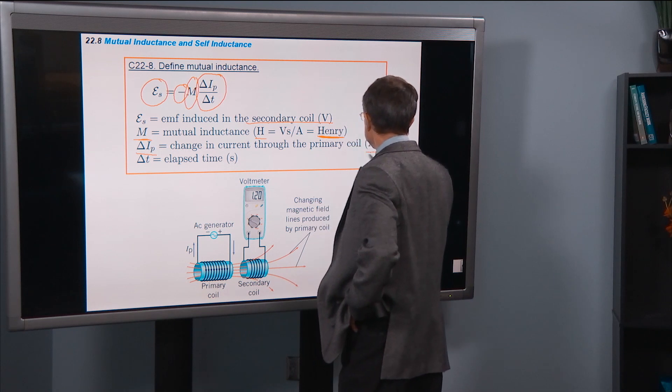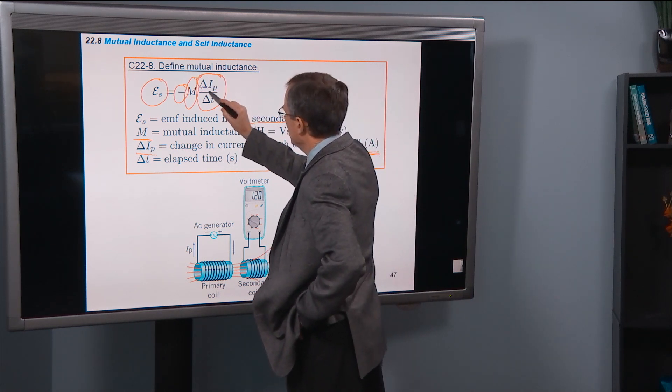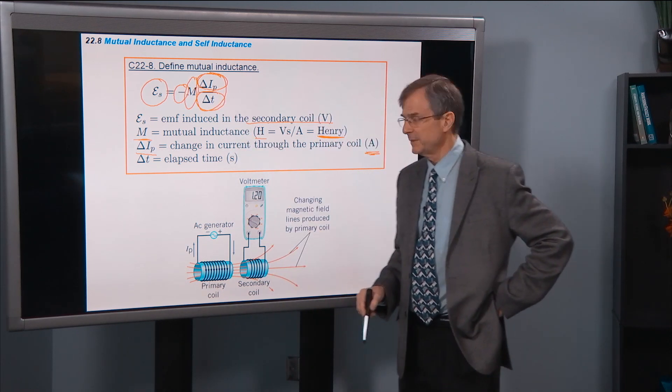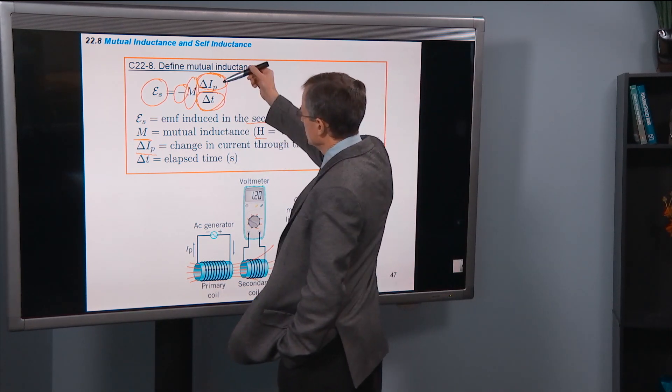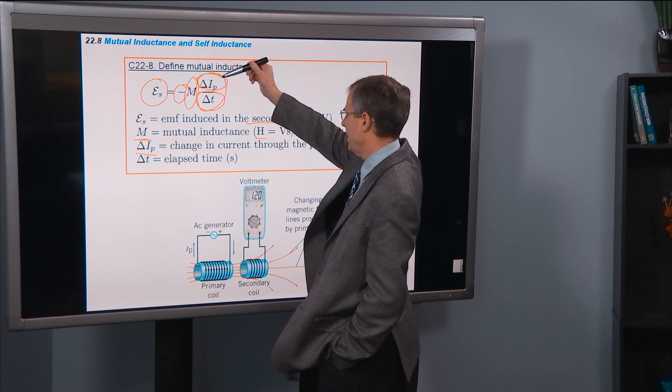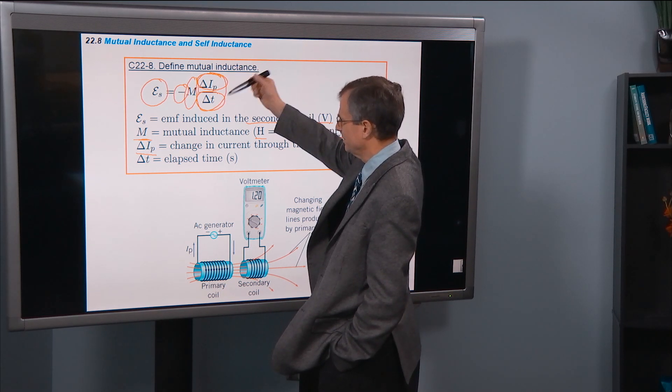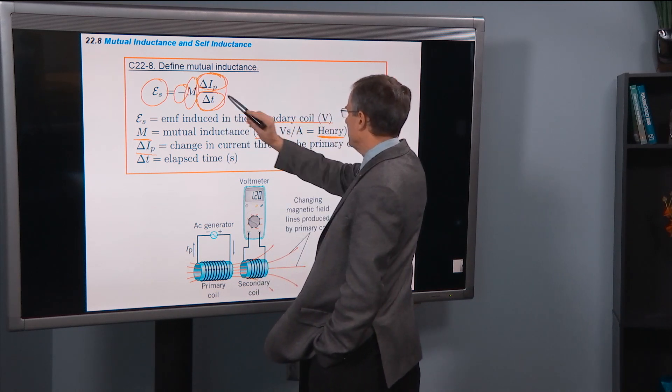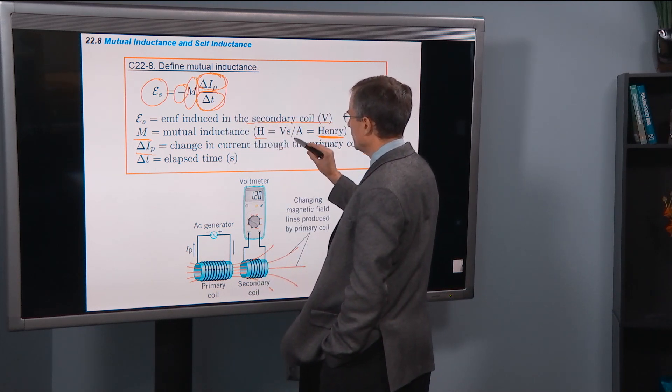The current is measured in amps. So this is measured in amps. Delta T is still the elapsed time, no problem there. It's measured in seconds. So current measured in amps, time measured in seconds, times M, which is volt seconds per amp.